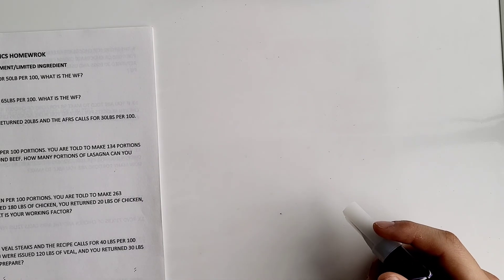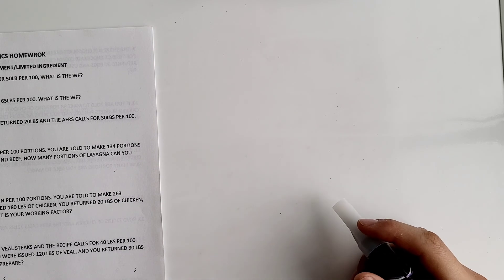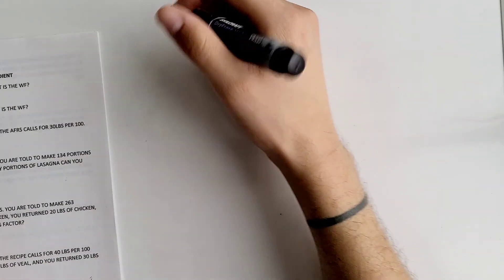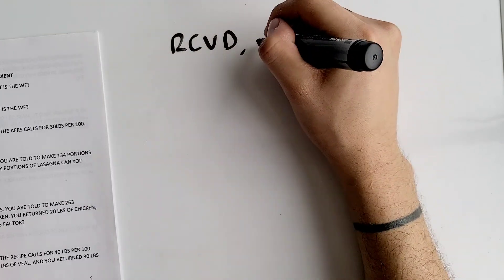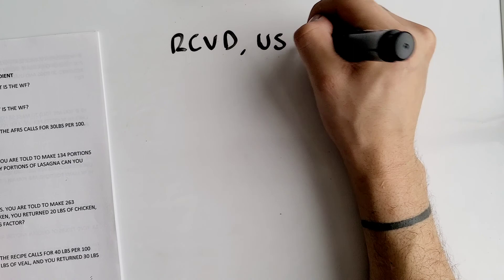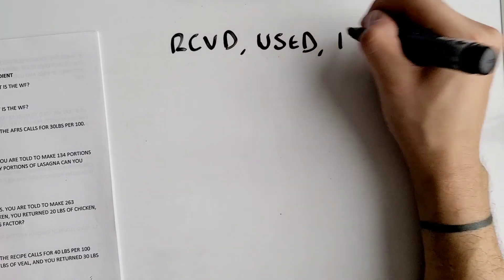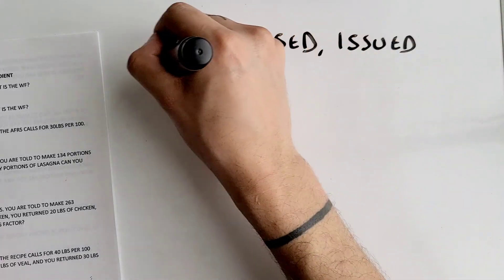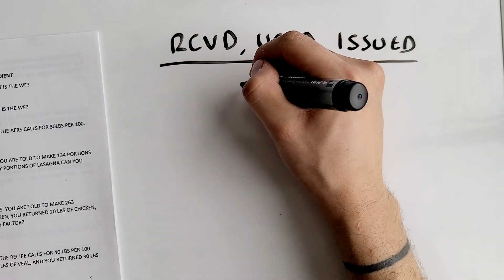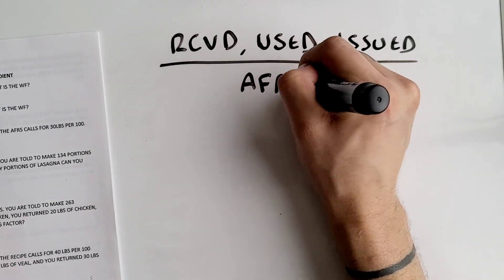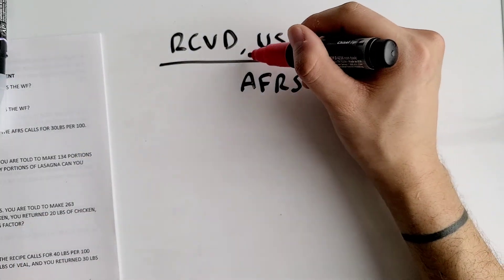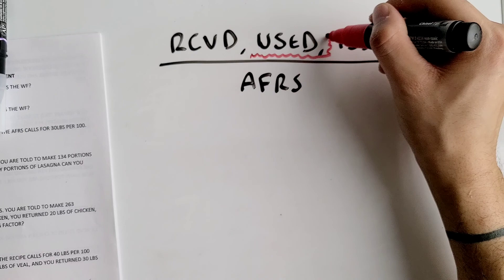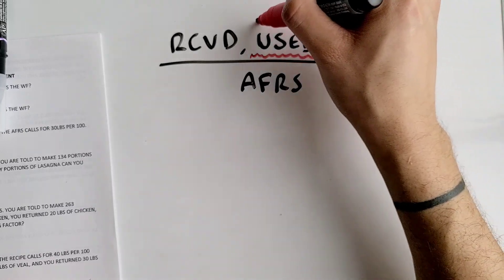Today we're going over more word problems using the limited ingredient formula. Your formula is: take your received, used, or issued, and divide all of this by your AFRS — what your recipe calls for. The main word to look out for in these word problems is how much you actually used.